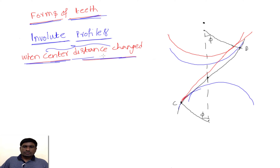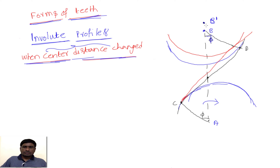What happens when center distance changes slightly? The blue color represents the original position — this is gear A and this is gear B, rotating as shown. In the original position, the angle of action is 5. Now I slightly changed the position of center B to B-dash. This gives a new base circle, and I have drawn a tangent joining the two new base circles. This is the original pitch point P, and this is the new pitch point P1.